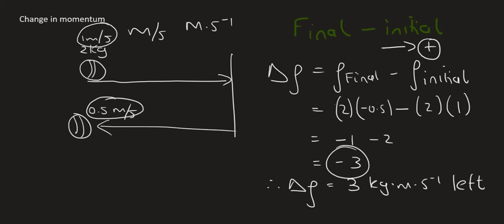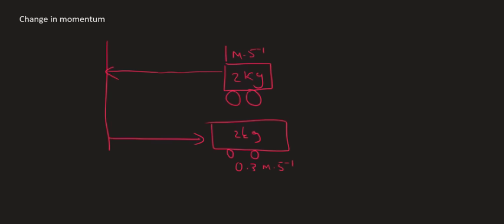We got a negative answer, but we chose right as positive, so it means our object is actually going to the left. That might still be a little confusing, but let's do another example. Here's another example where we've got an object that's going to hit a wall and then bounce off. The two objects drawn are the same — that's just a drawing issue.